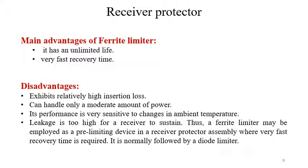The main advantages of the ferrite limiter are unlimited operating life — there is less chance of destruction of the device — and very fast recovery time. However, there are certain disadvantages: it exhibits relatively high insertion loss, can handle only a moderate amount of power, and its performance is very sensitive to changes in ambient temperature. Leakage is too high for a receiver to sustain unprotected; thus a ferrite limiter may be employed as a pre-limiting device in a receiver protector assembly where very fast recovery time is required, and it is normally followed by a diode limiter.